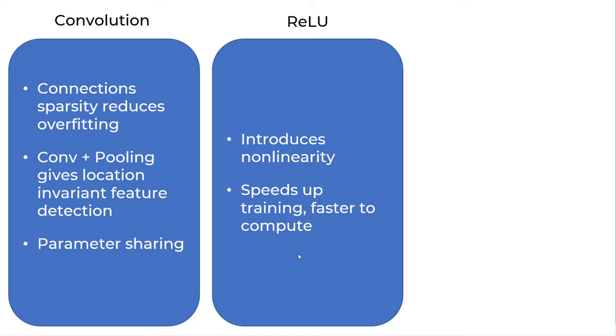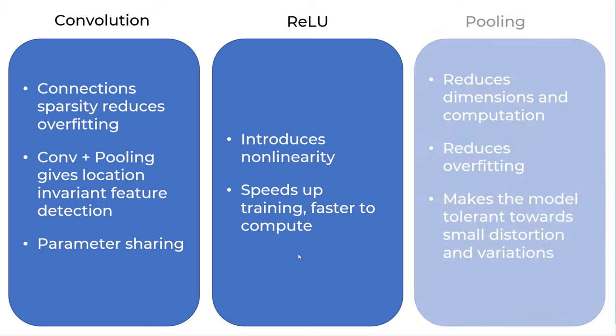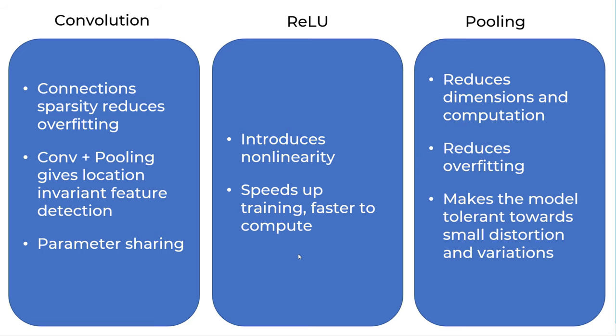The benefit of ReLU is that it introduces non-linearity, which is essential because when we are solving a deep learning problems, they are non-linear by nature. It also speeds up training and it is faster to compute. Remember ReLU is you are just doing one check whether the number is greater than zero or not. The benefit of pooling is that it reduces dimension and computation. It reduces overfitting and makes the model tolerant to our small distortions.